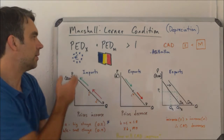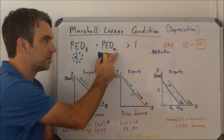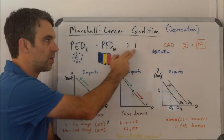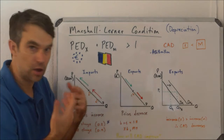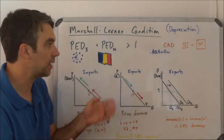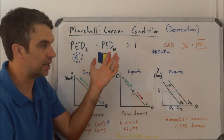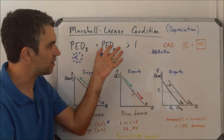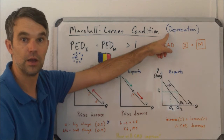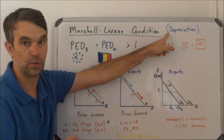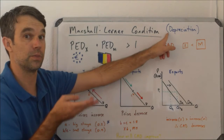The formula for it is: PED of exports added to the PED of imports. If that sum is greater than one, then we say that the Marshall-Lerner condition — the MLC — is satisfied. If the MLC is satisfied, then depreciating the currency will make the current account deficit reduce; that is, the current account will get closer to being balanced.